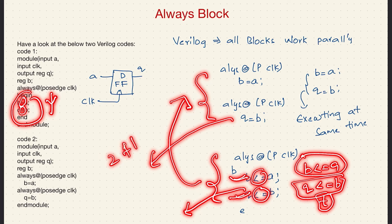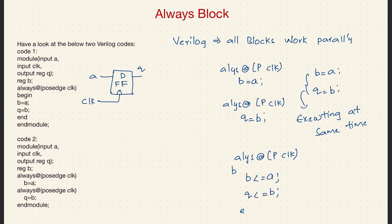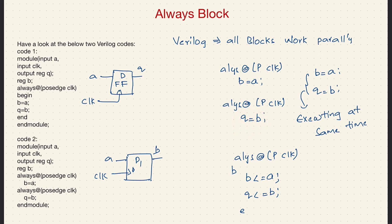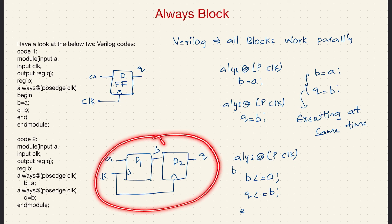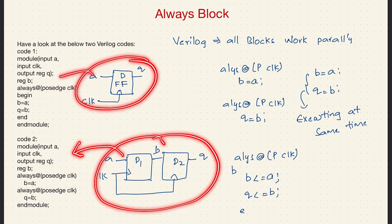So indirectly this code and this code are both the same — that's the reason we will be getting two flops in both cases. Let me draw the circuit: in the first stage, input is a, output is b — call this flop T1. In the second stage, input is b, output is q — call this flop T2 — and the same clock goes to both.